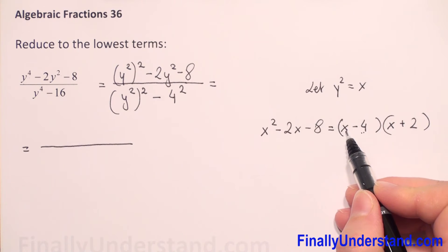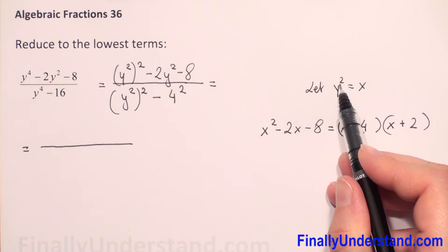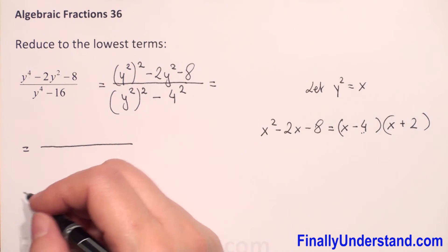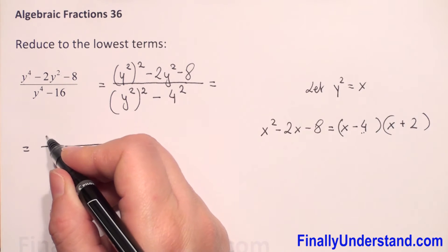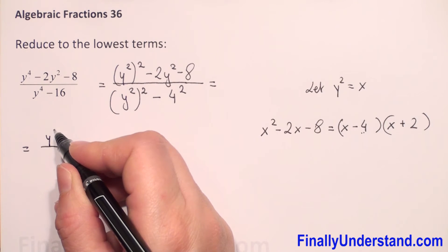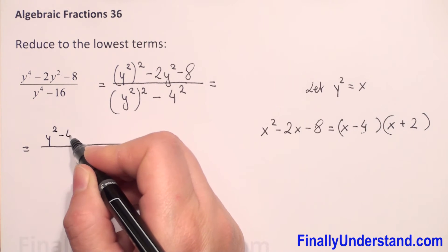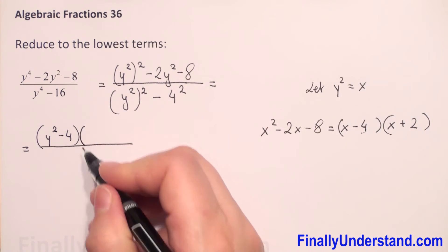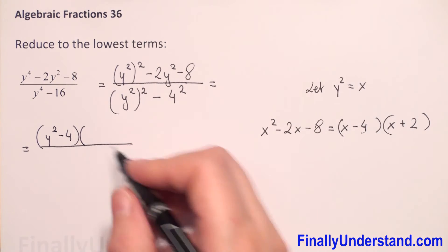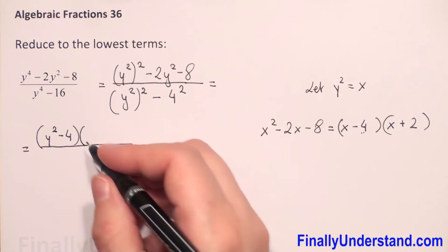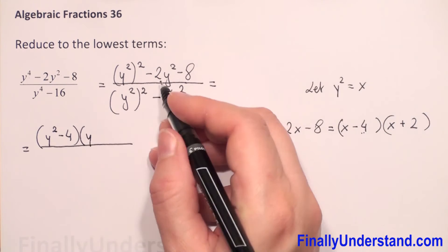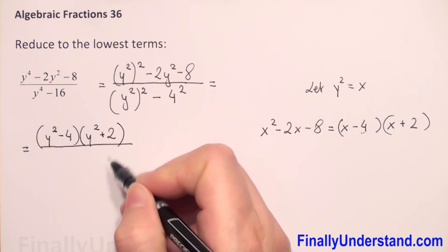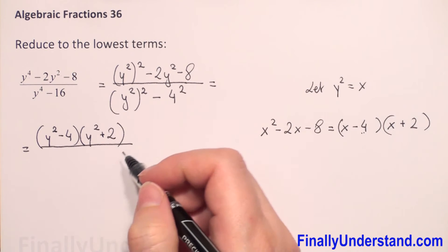We can now rewrite our numerator. Instead of x we put y squared, so the first parenthesis is y squared minus 4, and the second parenthesis, again replacing x with y squared, is y squared plus 2.